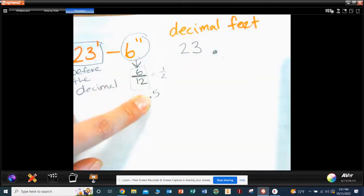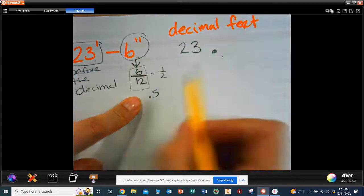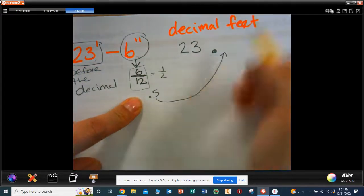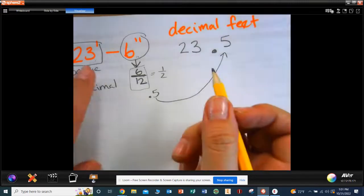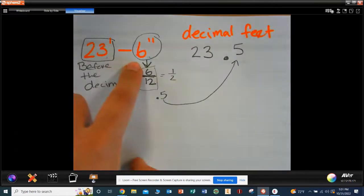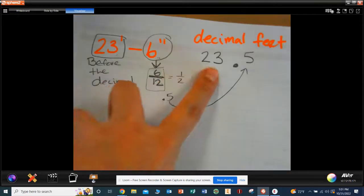Yeah, because this line means division, right? So I'm going to divide by 12 equals 0.5, right? Some of you knew that before I did the calculations. So where does this number go? Behind the decimal.